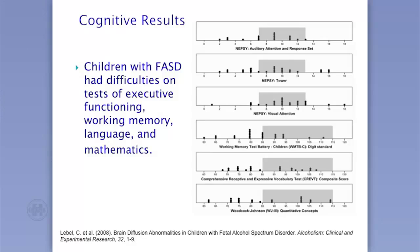We also ran a battery of cognitive tests to see whether DTI parameters would correlate with cognitive difficulties — that's my area. Kids showed difficulty on executive functioning, working memory, language, and mathematics, which isn't new. This is just a different way of graphing it: each dot is a participant, the mean score is 10 with a standard deviation of three on either side, and the shaded region represents typical performance. Some kids are still within average range, but many fall in the low to very low range.